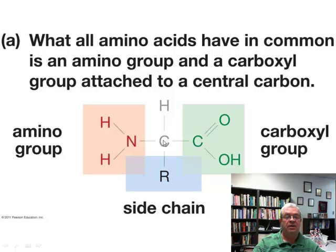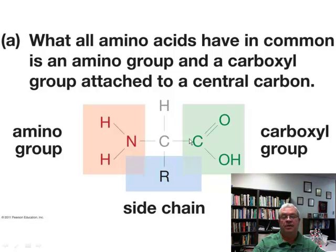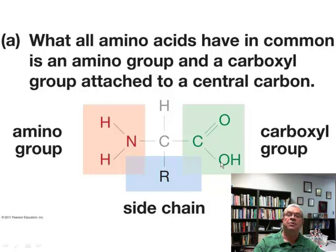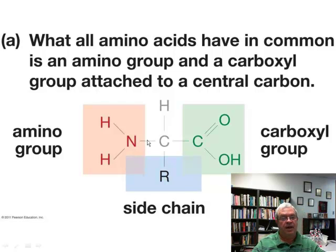What's attached to these four bonds? Well, in one direction there is a hydrogen atom. Over this way there is something called a carboxyl group that has four atoms — one carbon atom, one oxygen atom here, one oxygen atom, and one hydrogen atom. How do we know those are two different atoms? Because they're both capital letters.